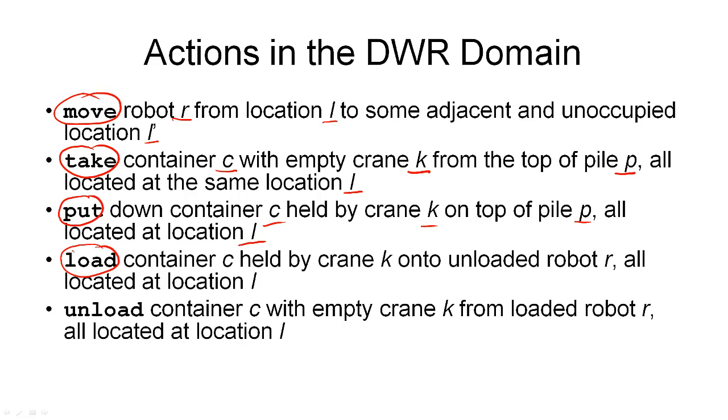One is loading a container, but this will involve a robot, too. So we load a container C that is held by the crane K onto an unloaded robot R, so the robot must not already have a container on it. And again, this must all be at the same location. The reverse action is to unload the container from the robot. The crane must be empty so that we can do this, and all the objects must be at the same location. These are the five action types that are available in the dockworker robot domain.